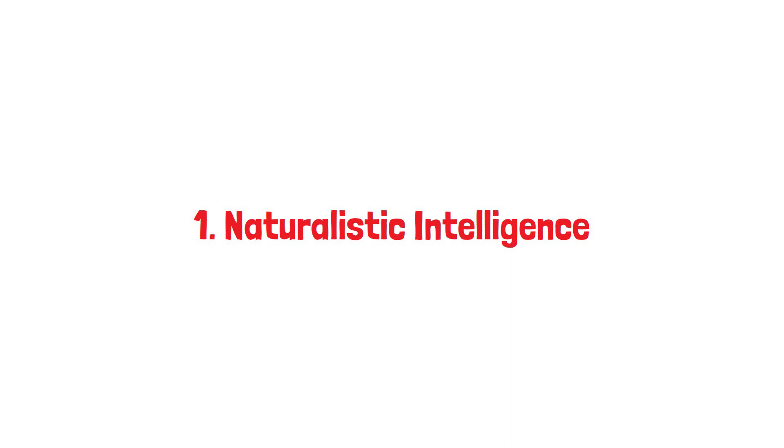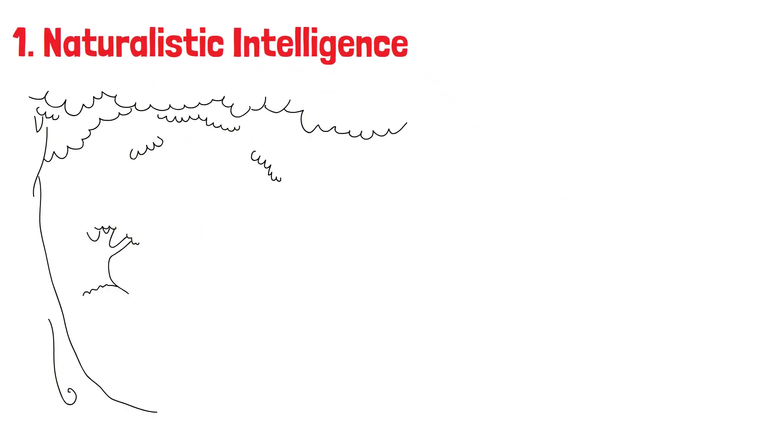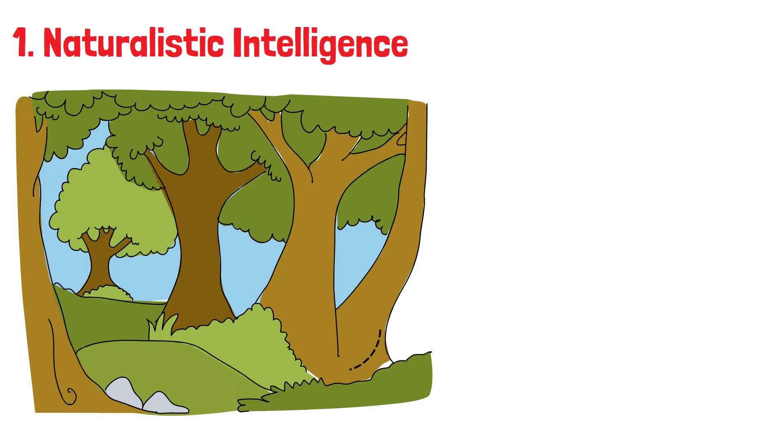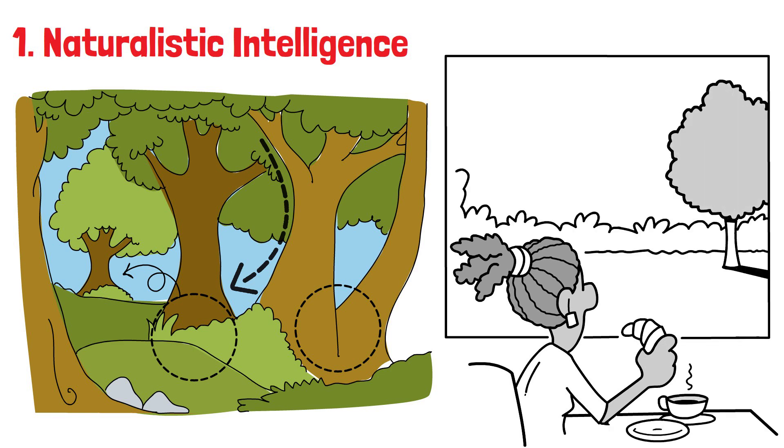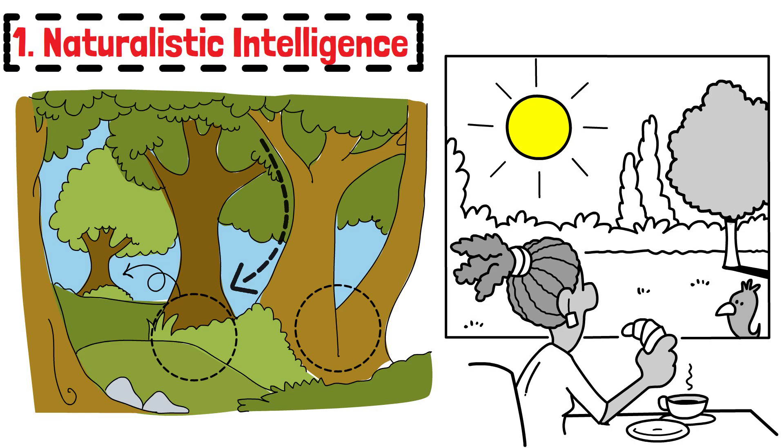Number one, naturalistic intelligence. Do you find yourself fascinated with the natural world, noticing patterns and categories in nature that others overlook? Do you love exploring the outdoors, identifying different species of birds, trees, and wildlife? If so, you likely possess strong naturalistic intelligence.